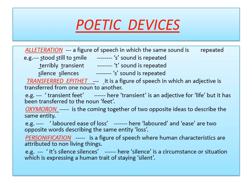Oxymoron is another poetic device used in this poem. Oxymoron is the coming together of two opposite ideas to describe the same entity. Have a look at the last line of stanza 2 where the poet says 'laboured ease of loss'. Here 'laboured' and 'ease' are two opposite words describing the same entity — loss.